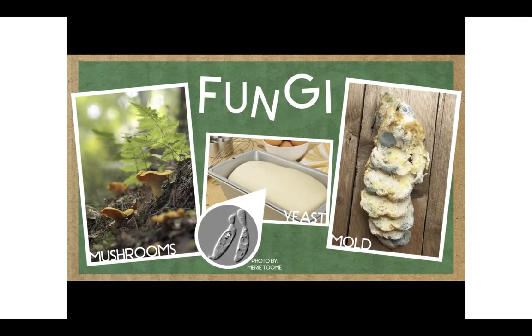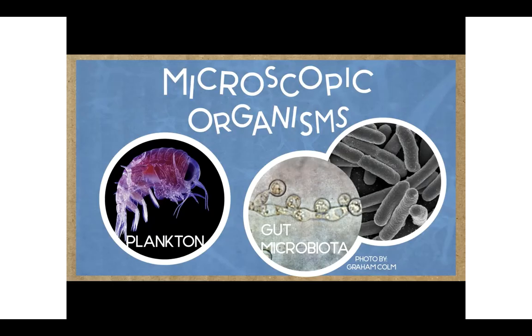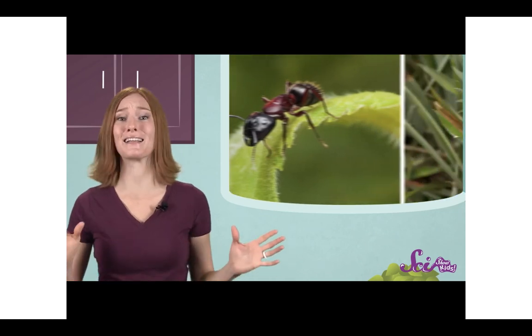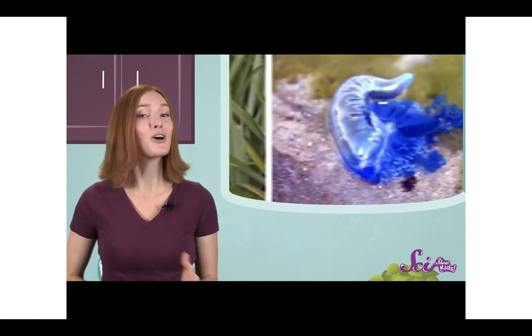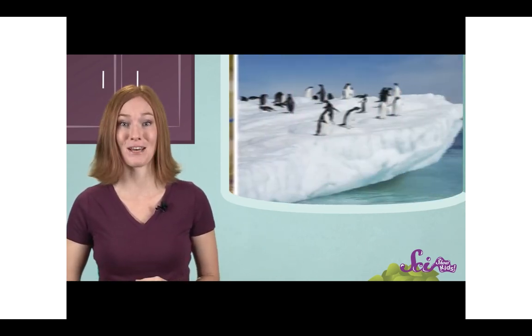What kinds of living things can you think of? There are plants and animals of course, but what else? What about fungi, like mushrooms in the woods, and yeast in our kitchens, or the yucky mold that grows on old bread? And what about living things that are too small to see with just our eyes, like plankton in the rivers and oceans, or tiny bacteria that live everywhere from the soil to our own bodies? The list of different living things on earth is practically endless, and there are biologists who study every single one of them.